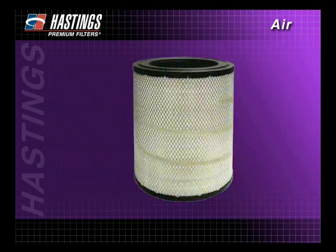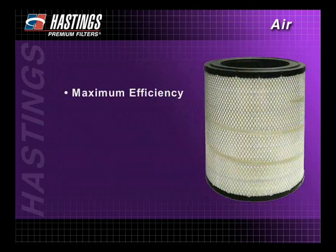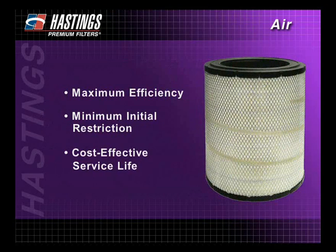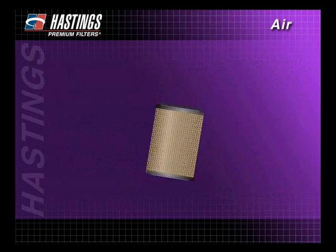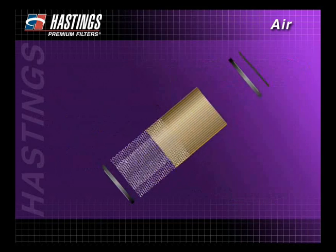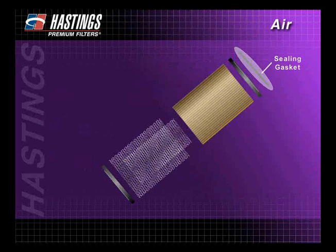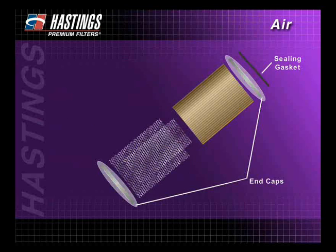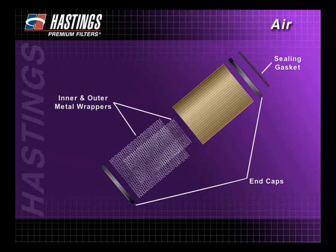Every Hastings air filter is designed to have an efficient balance of three important characteristics: maximum efficiency, minimum initial restriction, and cost-effective service life. The primary components of a typical air filter element are the sealing gasket, the end caps or molded ends, the inner and outer metal wrappers, and the media.